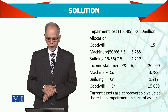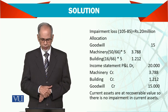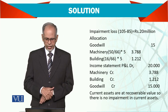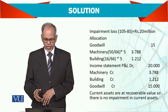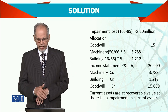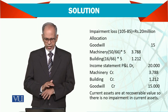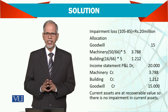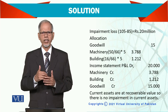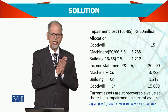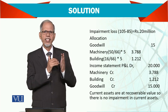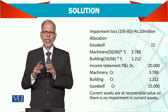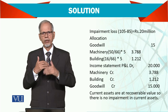So the allocation is complete. To pass a journal entry for bookkeeping purposes: debit impairment loss $20 million; then credit goodwill $15 million, machinery $3.788 million, and building $1.212 million. Current assets are at recoverable value, so there is no impairment on current assets. We need to be very careful how to allocate — we call it a pro-rata basis. Add the balances of the remaining assets, find the ratio between them, then take the remaining impairment loss and share it among those assets. The total impairment loss is shared accordingly. Thank you very much.